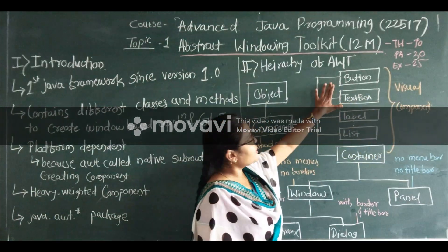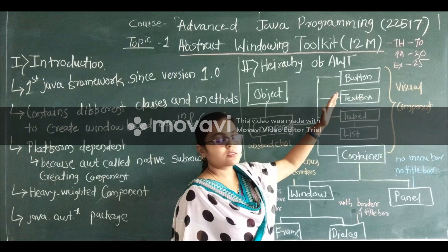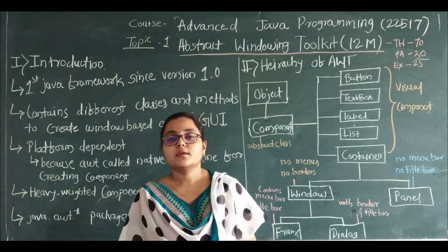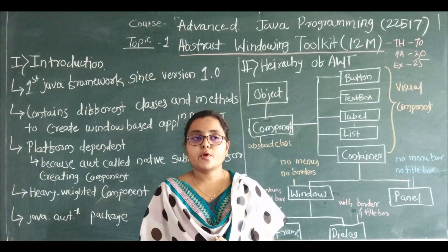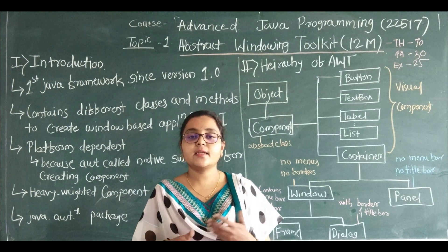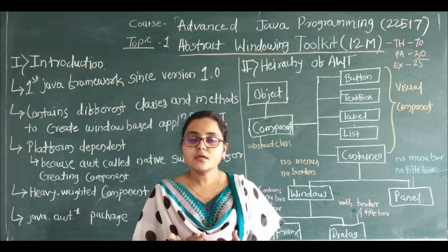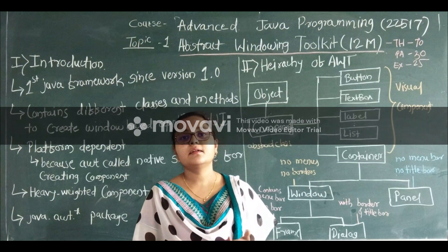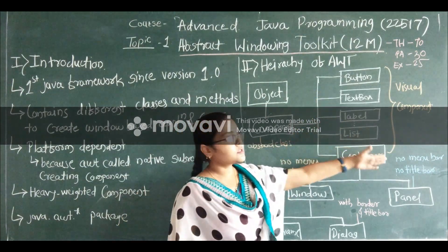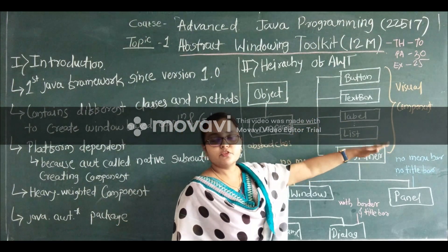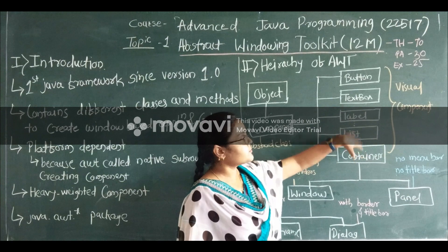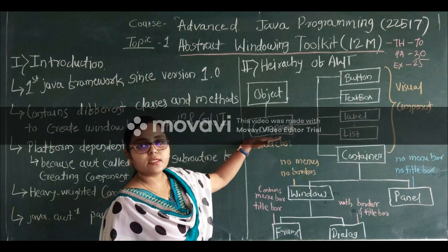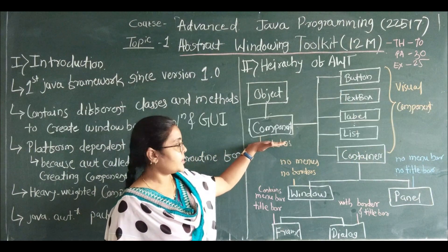Visual components means your button, text box, label, list, and so on — visual components which are directly interacted with by the user and which we can see. Those components are called visual components, and these visual components are encapsulated within the class Component.